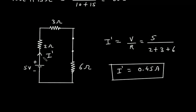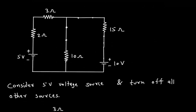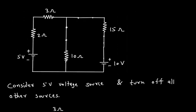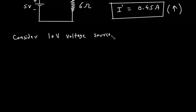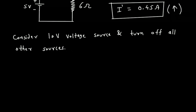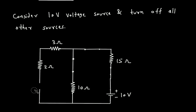The direction of I prime is upward. Next, we consider this 10 Volt voltage source and turn off all other sources. If we turn off the 5 Volt voltage source, it will be a short circuit.